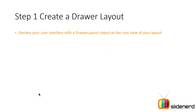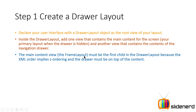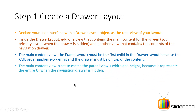To declare your user interface, use the DrawerLayout object as the root view of your layout. Within it, have one view for the main content — which is a FrameLayout in most cases — and another view for the navigation drawer. The main content FrameLayout must be the first child inside the DrawerLayout, because the navigation drawer comes as the second view and will be placed on top of the first one as per Z-ordering. For those familiar with CSS, Z-ordering controls which element appears on top when multiple elements occupy the same space.